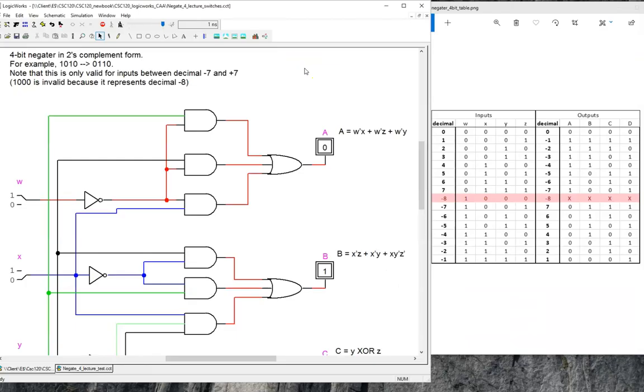Now that the equations are complete, let's implement those in the simulator. Here we see the gate level circuit. Note the finer details. The text up top explains the function of this circuit, including the range of acceptable values. The text near the outputs shows the Boolean equations just described. And the wires are color-coded to help us trace the paths of the input variables.